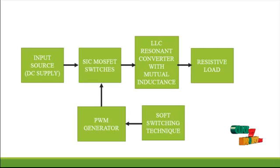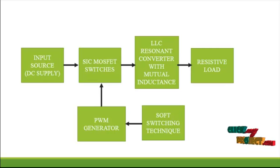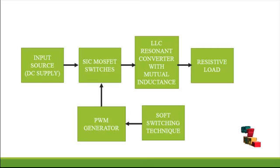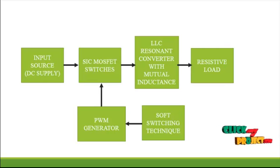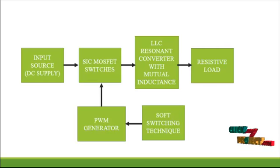The MOSFET turns on while the current is flowing through the anti-parallel diode and the voltage across the MOSFET is zero. The rectifier network produces DC voltage by rectifying the AC current with rectifier diodes and capacitors. The rectifier network can be implemented as a full-wave bridge or center-tapped configuration with a capacitive output filter.